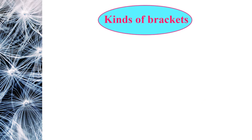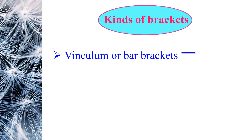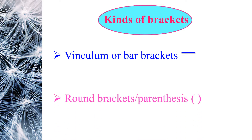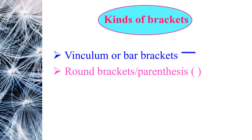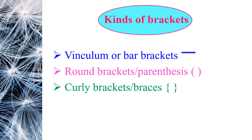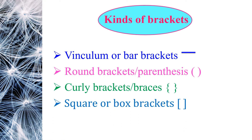Kinds of brackets. Different kinds of brackets may be used in arithmetic expressions. The most commonly used brackets are: vinculum or bar brackets — a bar written above the numbers in the sum, to be considered as a bracket. Second, round brackets or parentheses. Third, curly brackets or braces. Fourth, square or box brackets.